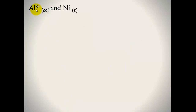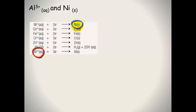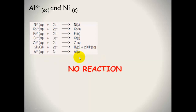Third example: aluminium³⁺ ions and nickel solid. I've cut out the electrochemical series again. We need to find Al³⁺ — there it is — and nickel solid — there it is. Remember the top reaction has to go in a forwards direction, but we don't have any nickel²⁺ ions — we've only got nickel solid. And the bottom reaction has to go in a backwards direction, but we don't have any aluminium solid. This reaction cannot go ahead. There is no reaction.